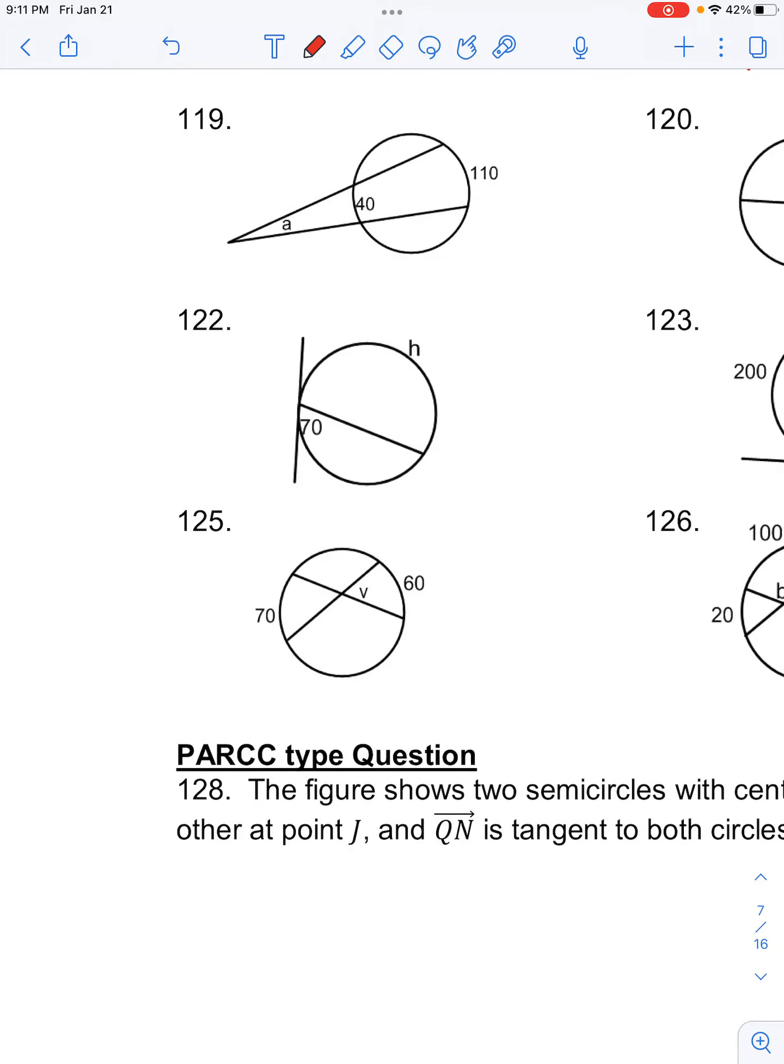In number 119, your class for circles asks you to solve for the missing variable. So we're solving for this angle A, which is the interior angle of these two secant lines.